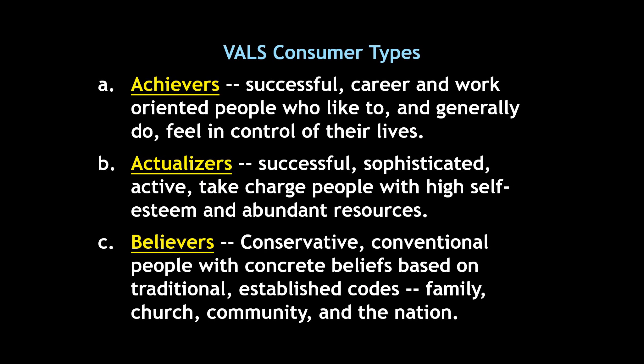VALS identifies eight different consumer types. Achievers are successful, career and work-oriented people who generally feel they're in control of their lives. Actualizers are successful, sophisticated, active, take-charge people with high self-esteem and abundant resources — they don't have to work super hard to do what they want, they just go and do it. Believers are conservative, conventional people with concrete beliefs based on traditional established codes like family, church, patriotism, and a sense of community.